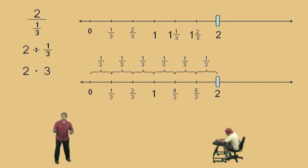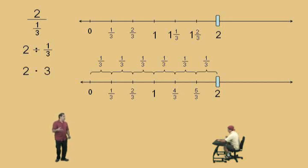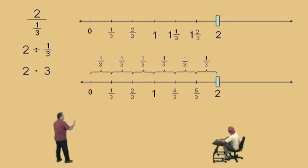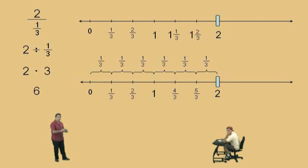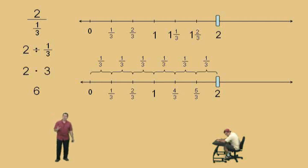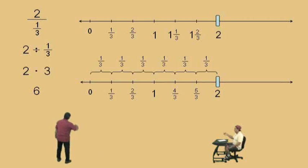A reciprocal means you're taking the fraction — for instance 1/3 here — and seeing how many times it goes into 1. So the reciprocal of 1/3 is 3, because it takes 3 of those 1/3s to go into a 1. And if it takes 3 one-thirds to go into a 1, obviously 3 times 2, which is 6, tells us how many 1/3s go into a 2. That's why when you change division to multiplication you take the reciprocal. 2 times 3 is 6, and that's our answer.